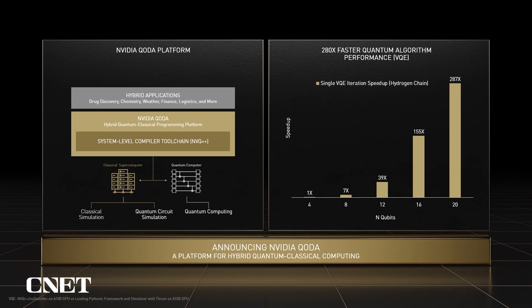Now that we've seen some code, let's take a look at some performance. CODA is designed from the ground up for high performance hybrid computing, whether on an emulated processor or a physical quantum processor. Here we're looking at preliminary performance results of the CODA implementation of a variational quantum eigensolver running on an A100 GPU and comparing it to a leading framework also running on an A100 — a GPU-to-GPU comparison. When running in an emulated environment, CODA leverages cuQuantum as a backend. We see that at 20 qubits we're already up to a 287x speedup over the leading framework also running on an A100 GPU.